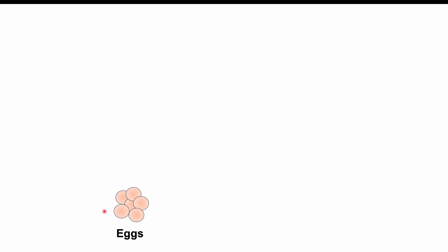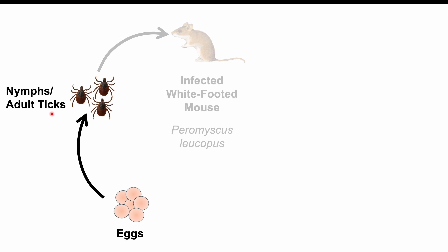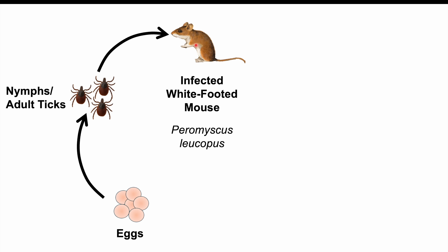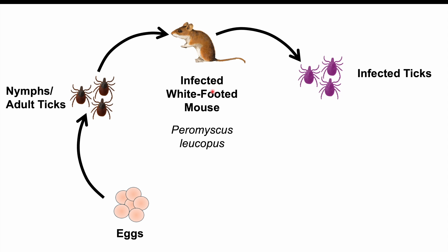Regarding how an individual gets infected: it starts with tick eggs. As ticks develop into nymphs and then adults, they are non-infected until they bite an infected animal. One of the most common animal reservoirs is the white-footed mouse, also known as Peromyscus leucopus. If a non-infected tick bites an infected white-footed mouse or white-tailed deer, the tick can then carry or harbor the anaplasma bacteria and becomes an infected tick.